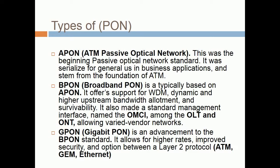A-PAN, ATM Passive Optical Network, was the beginning passive optical network standard. It was designed for residential and business applications and stemmed from the foundation of ATM. B-PAN, Broadband PAN, is typically based on A-PAN. It offers support for WDM, dynamic and higher upstream bandwidth allotment, and survivability. It also made a standard management interface named the OMCI among the OLT and ONT, allowing varied vendor networks. G-PAN, Gigabit PAN, is an advancement to the B-PAN standard. It allows for higher rates, improved security, and an option between layer 2 protocols: ATM, GEM, and Ethernet. PAN WDM and DOZIN.